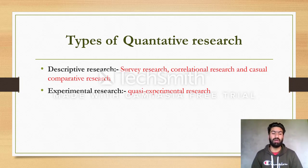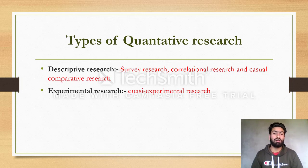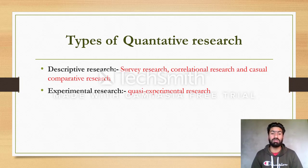Descriptive research does not have complete control over variables, whereas experimental research is conducted in laboratory situations where the investigator has complete control over the variables being studied. Descriptive research is considered the first type of quantitative research, and experimental research is the other main type.